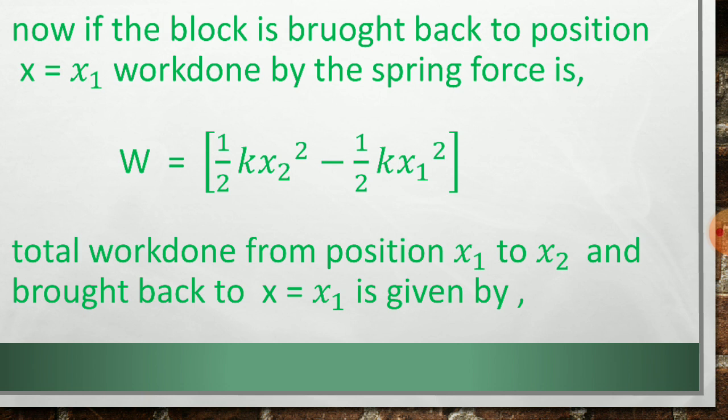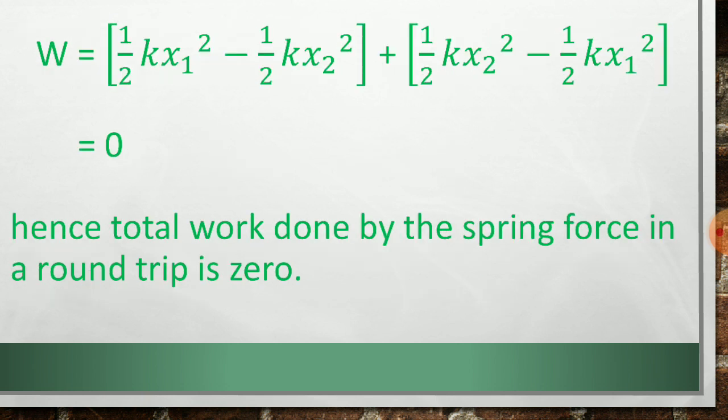Therefore, the total work done when the block moves from position x1 to x2 and brought back to x is equal to x1 is given by adding about 2 equations. Then we get W is equal to 1 half kx1 square minus 1 half kx2 square plus 1 half kx2 square minus 1 half kx1 square. Now simplifying this equation, we get it is equal to 0.